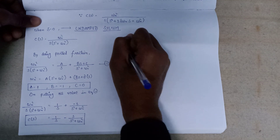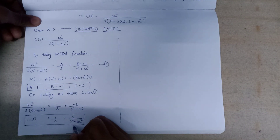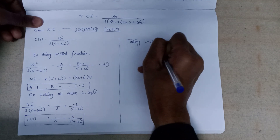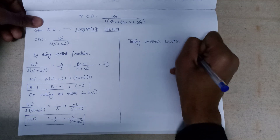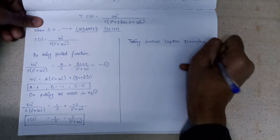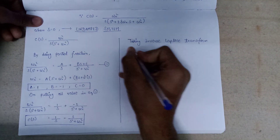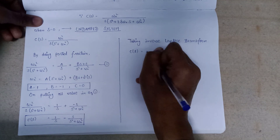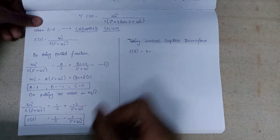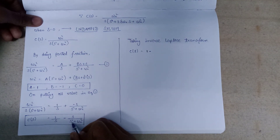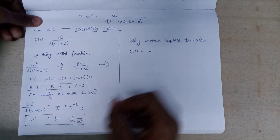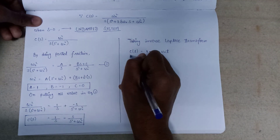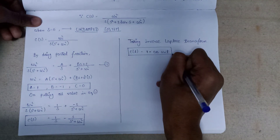Now on taking the inverse Laplace transform, C(s) will be converted into c(t). The inverse Laplace of 1 over s equals 1. This minus sign is as it is. After that, the inverse Laplace of s over (s squared plus omega_n squared) equals cos(omega_n * t). So this is the value of c(t) that we get after taking the inverse Laplace transform.